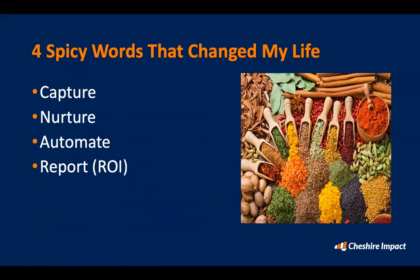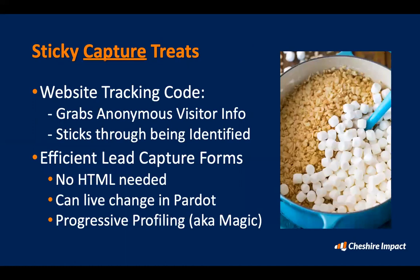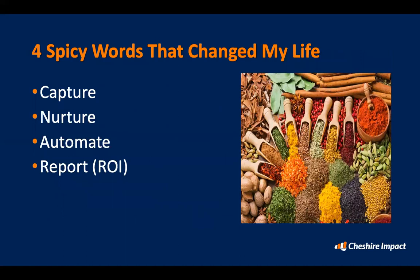That experience sets me up to tell you about the four words — the most important ones to remember. If you remember these four words, that is what matters: Capture, Nurture, Automate, and Report. Those are the most important words, and this is exactly what marketing automation does. All the different features we're going to show you all tie into this. Write them down, screenshot them, get a tattoo — those are the words.